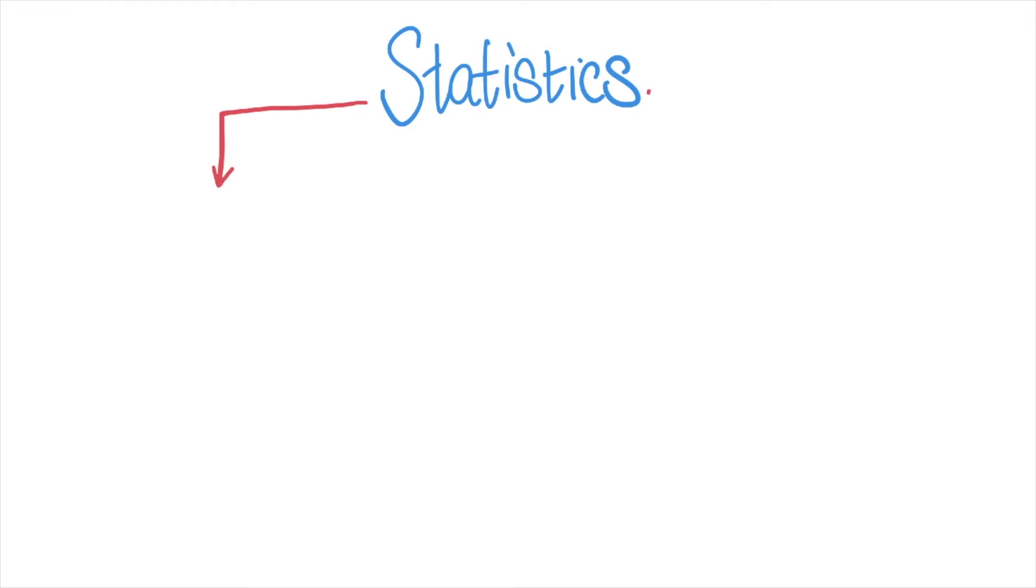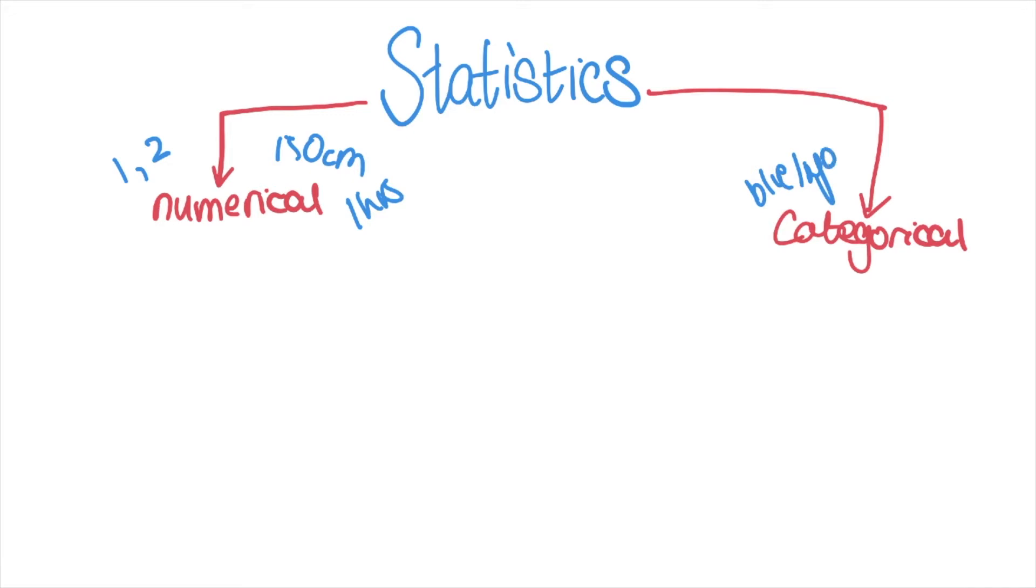The first thing is that statistics is about measuring and comparing and presenting data. There's two different types of data you can collect: numerical and categorical. Numerical data is all to do with numbers - counting, measuring, maybe centimeters, distances, times - whilst categorical data is all about picking a category like favorite color or what kind of pets you have at home.